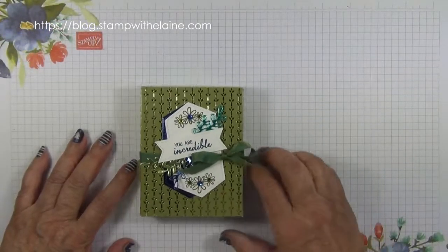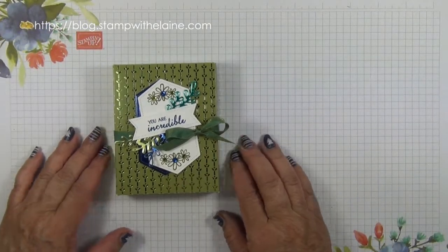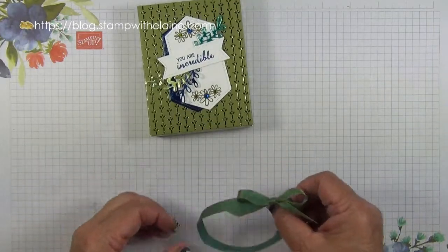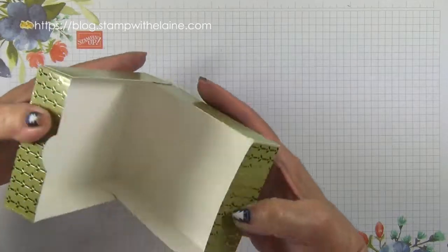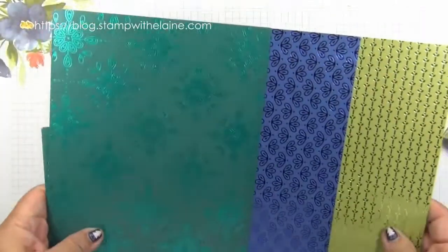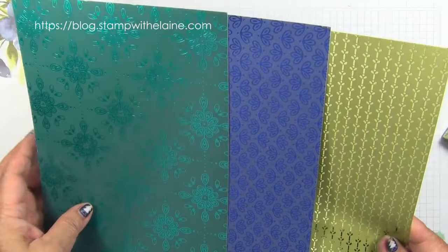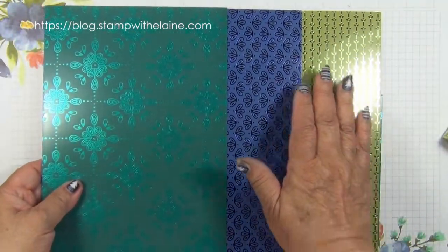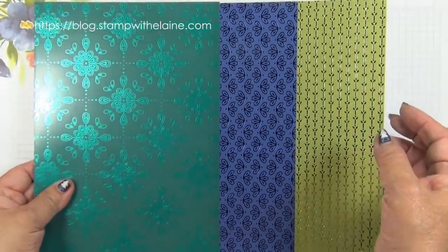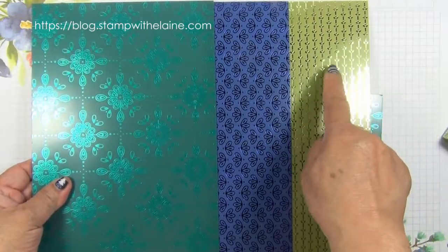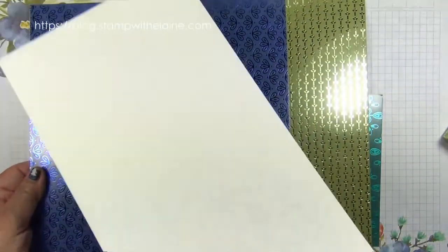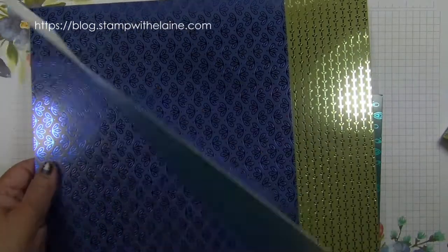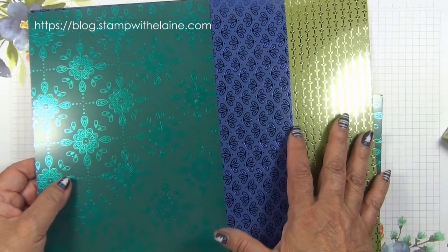I have a gorgeous box with an integral lid using the Noble Peacock Specialty DSP. This is the integral lid, so it's all in one piece. The Noble Peacock papers are specialty papers. These are 12 sheets of 12 by 12 or 30.5 by 30.5 centimeters and there's four sheets of three single-sided designs, so there isn't a design at the back but it's all made with a foiled pattern.